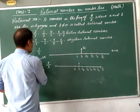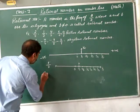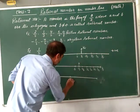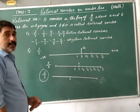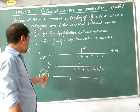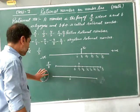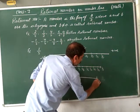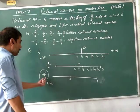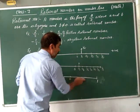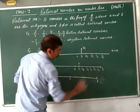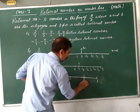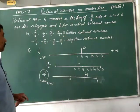Next, represent 2 by 3 on the number line. This is a proper fraction, so take 1 unit. Draw the number line with 0. Since the denominator is 3, divide 1 part into 3 equal parts. Then count 2 parts from 0. This point represents 2 by 3 on the number line.